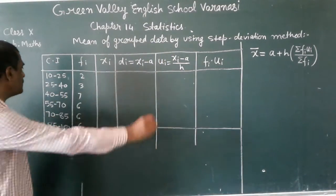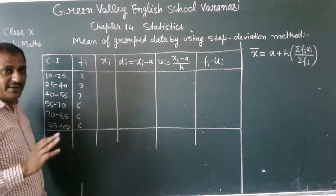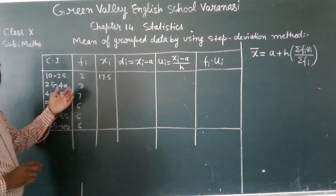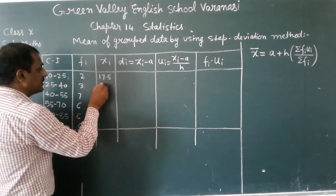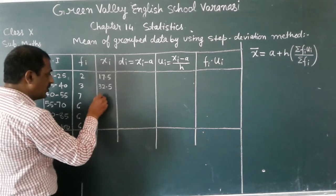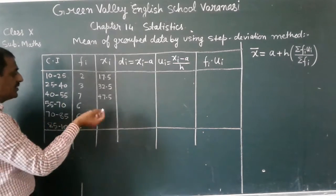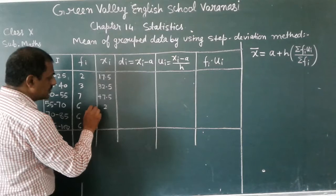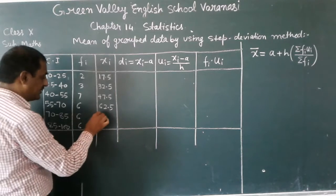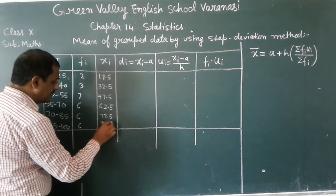First I am going to find the class mark. Here it will be 10 to 25, it will become the sum of this and this will be 35 divided by 2, 17.5. Next we will add 15, so it will become 32.5. Here is the class size. 47 plus 50 it will become 62.5. Next 62.5 plus 15, 77.5. In the next one 77.5 plus 15, 92.5.